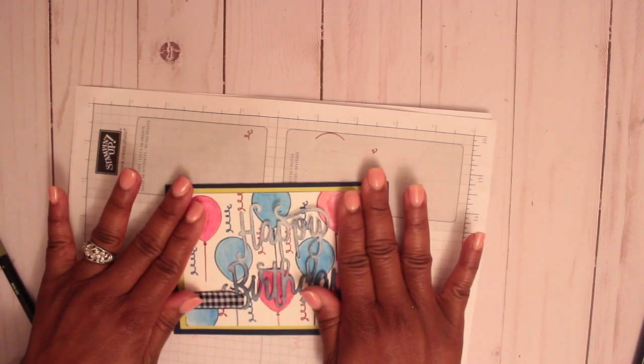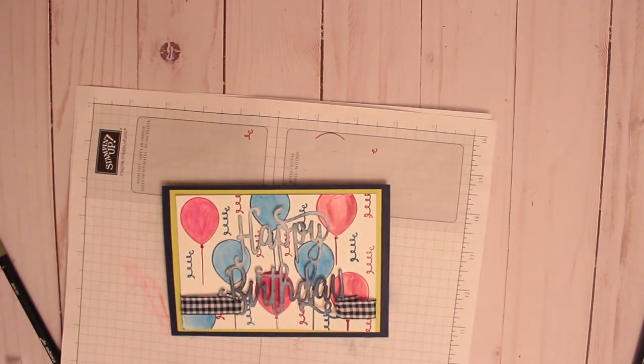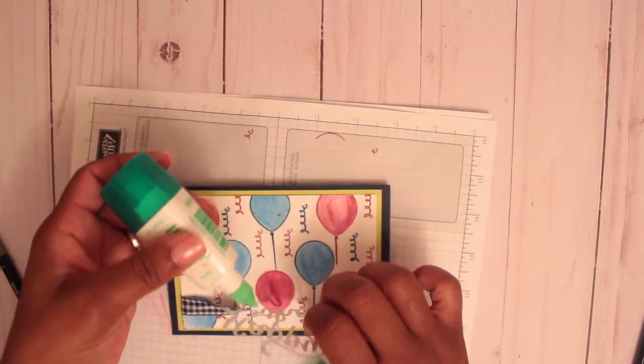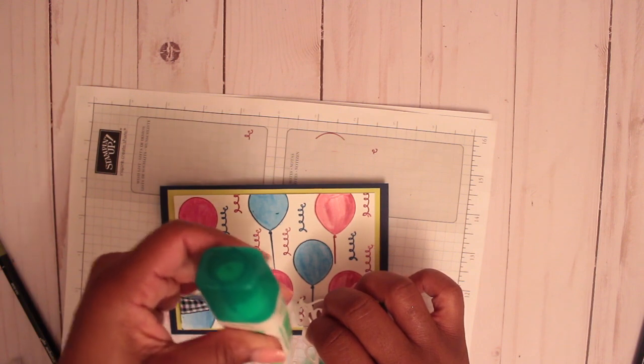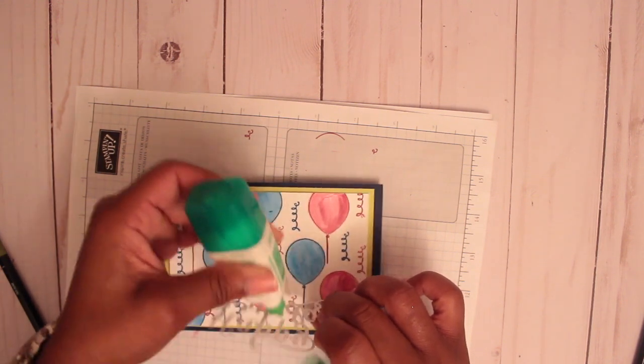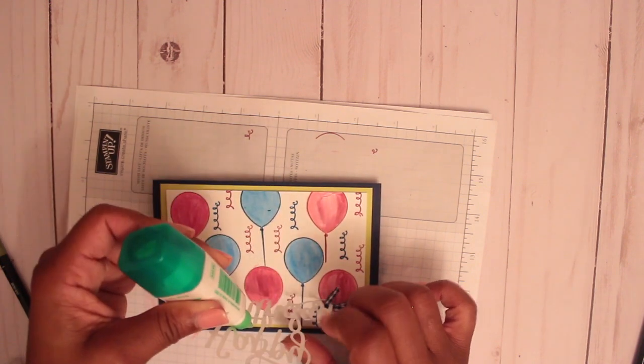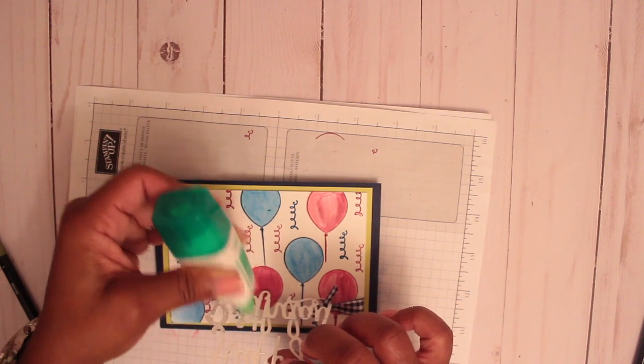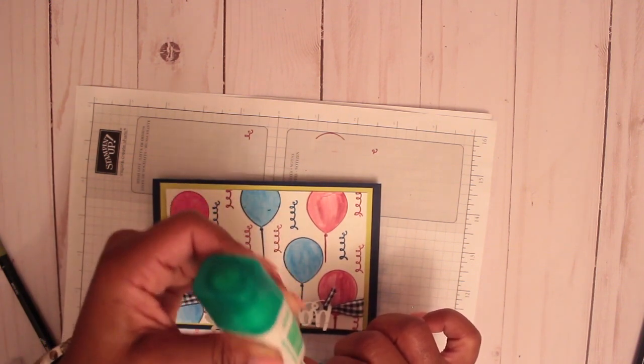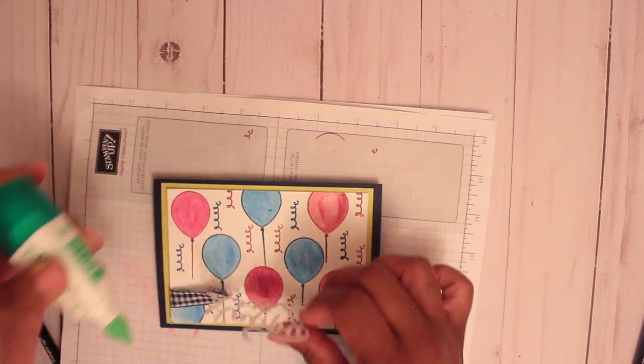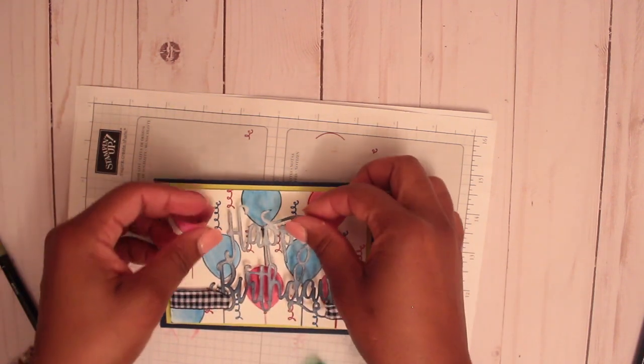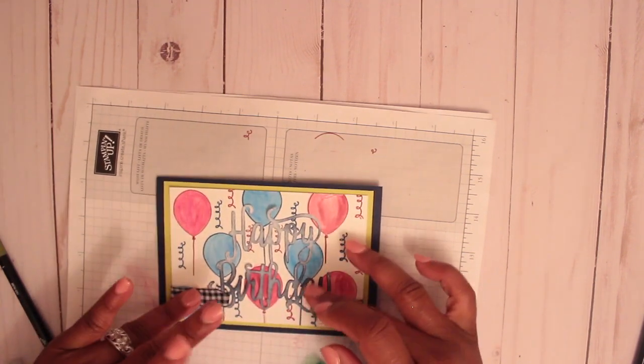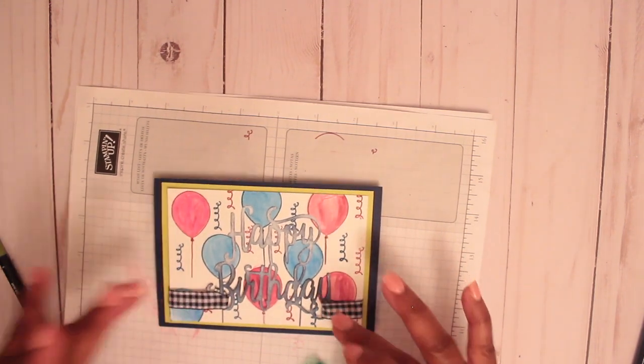That would be helpful. I'm just going to add little spots of multi-purpose glue to the back of this. I should have done this first before I did my ribbon to the back. There we go, that would work.